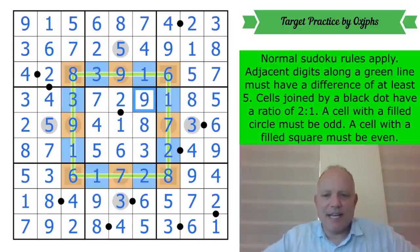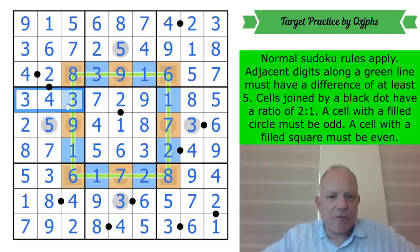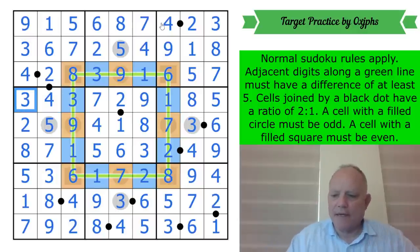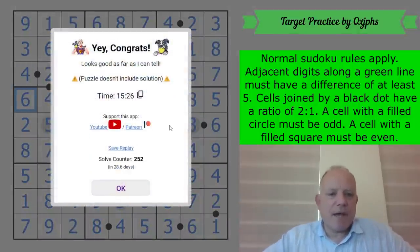It didn't give me a tick. So, have I still done something wrong here? Or have I? Yes, I have. Look, I've got three, four, three there because I mistyped the six here. There we go. That's better. There we are.